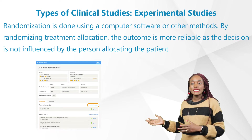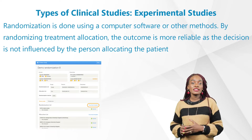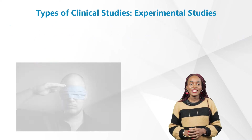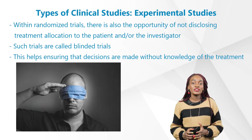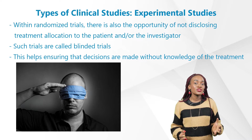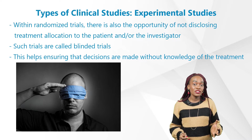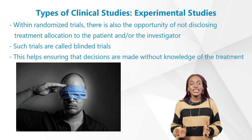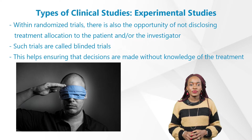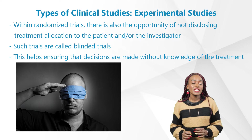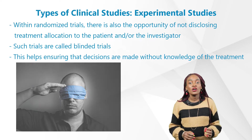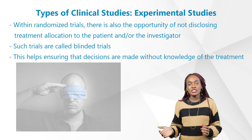Here you can see an example of the computer software we use to randomize patients. Within randomized trials, there is also the opportunity of not disclosing treatment allocation to the patient and/or the investigator. Such trials are called blinded trials, which further helps ensure that decisions are made without knowledge of the treatment and therefore will not influence the study outcome.